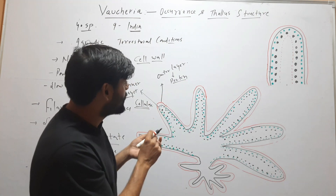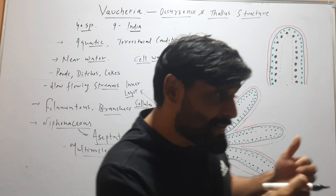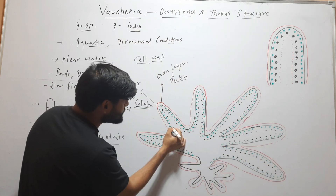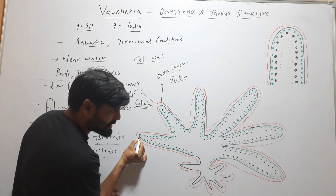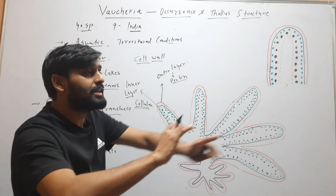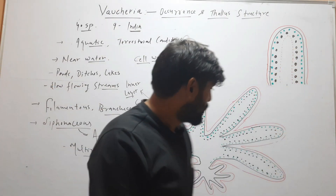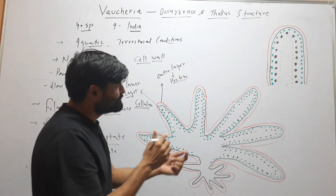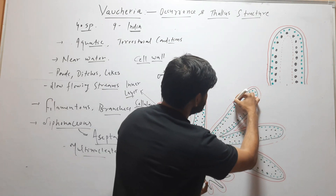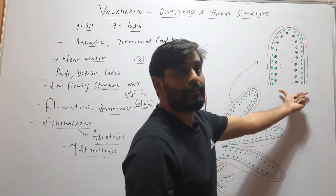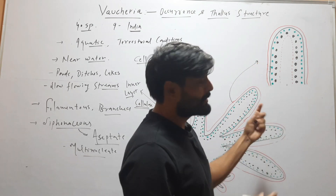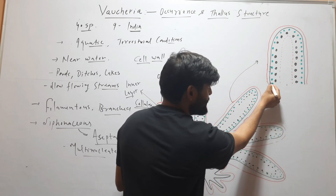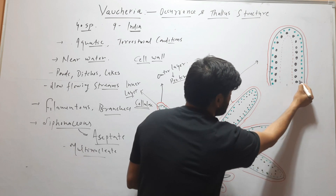Inner to the cell wall you can see peripheral cytoplasm. There is no septa, so the cytoplasm is continuous. In this magnified diagram of the filament you can see the outer cell wall, inner cell wall, and the cytoplasm in between.